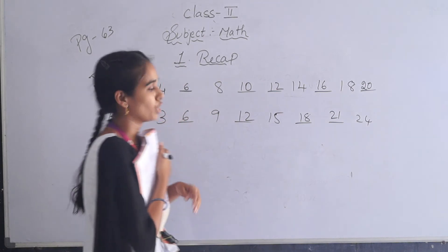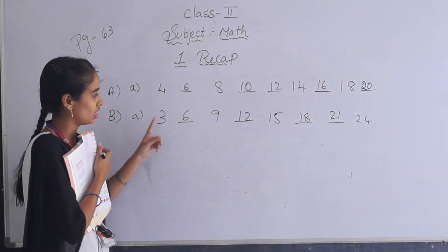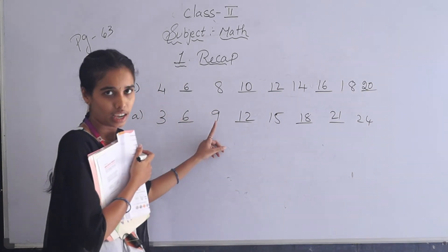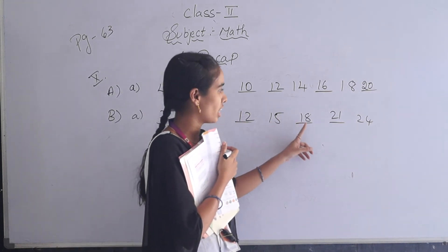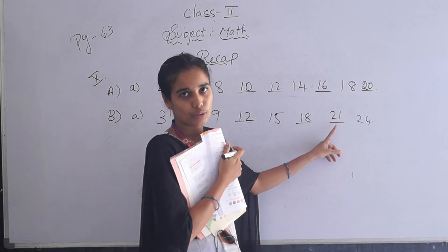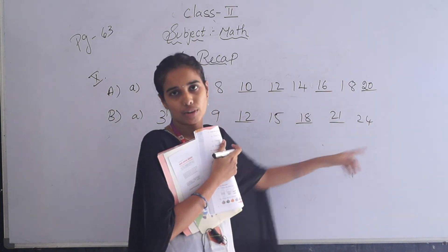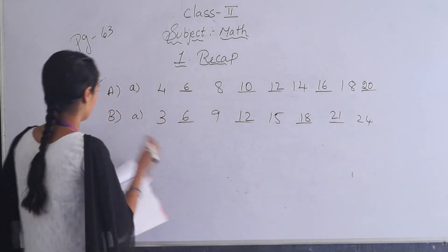This is also like 3 table. 3 ones are 3, 3 twos are 6, 3 threes are 9, 3 fours are 12, 3 fives are 15, 3 sixes are 18, 3 sevens are 21, and 3 eights are 24. Like this you have to do.